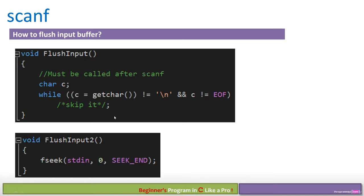The second technique uses the fseek mechanism but passes stdin instead of a file pointer, because the standard input stream can be treated as a file. We say fseek(stdin, 0, SEEK_END), which means seek the standard input stream from the beginning all the way to the end — skipping all data currently in the buffer stream. This avoids the issue of the first technique prompting the user when the buffer is already empty.